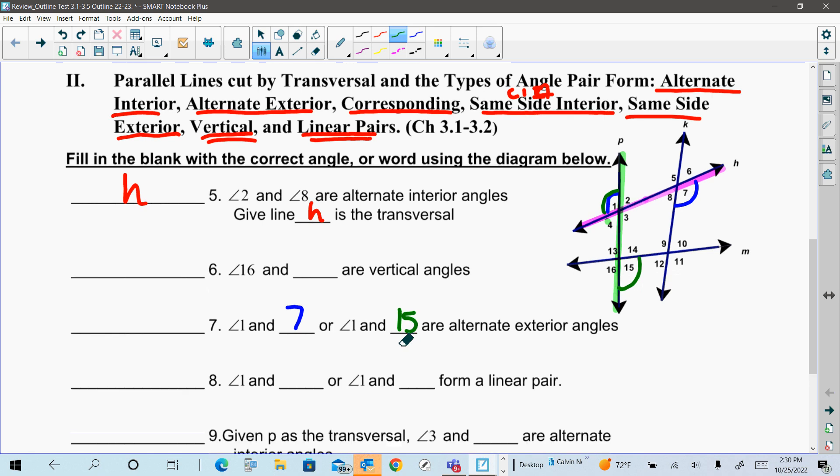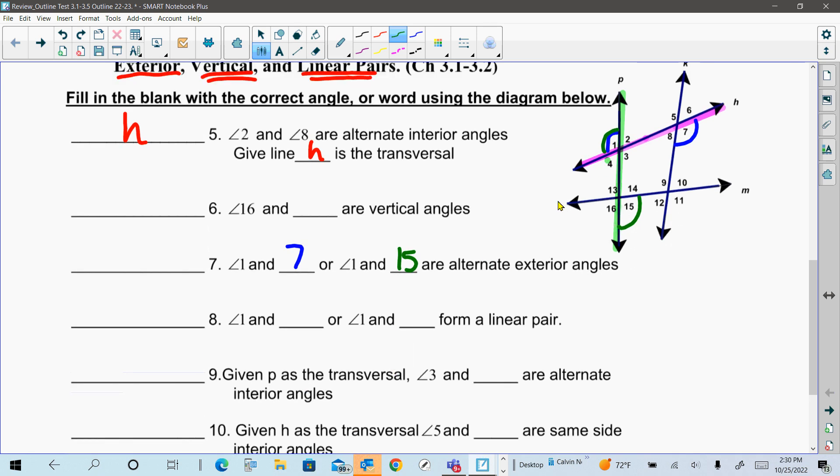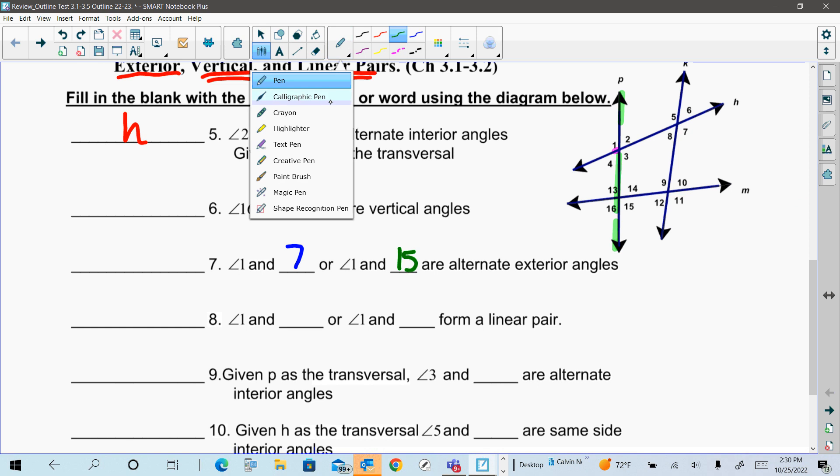For 9, it says if P is a transversal, so that means we're going to focus on just line P here. P is our transversal, and we're looking at angle 3. Here's angle 3, and what other angle would be alternate interior angles? It means it has to be in between the lines to be interior, so that would have to be 3 and 13. Alternating means they have to be on opposite sides of the transversal, so that's always a clue to help you see it.